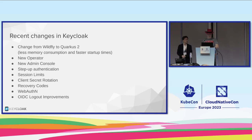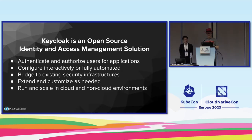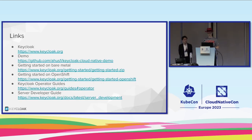Recent changes: we moved to Quarkus 2, have a new operator, a new admin console, and WebAuthn support. Looking forward, we're about to build upon Quarkus 3, will have FIPS 140-2 support, and are working on cross-DC and multi-region support, zero downtime upgrades, and a new account console. As always, roadmap details are subject to change. Keycloak: authenticate your users, configure it interactively or fully automated, bridge to existing infrastructures, extend and customize as needed, and run in both cloud and non-cloud environments.